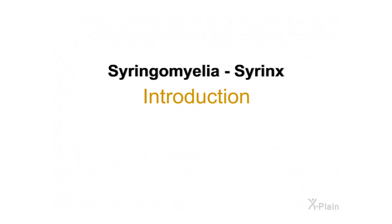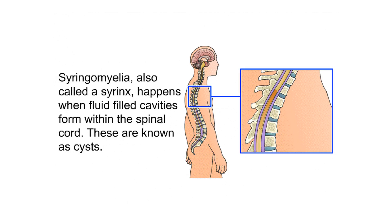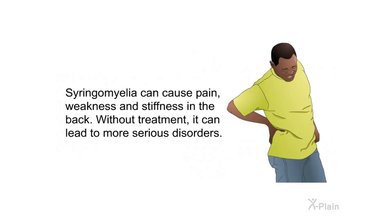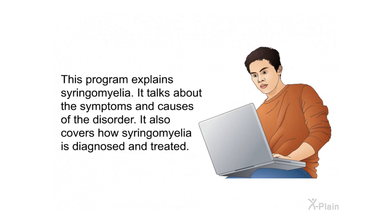Syringomyelia, also called a syrinx, happens when fluid-filled cavities form within the spinal cord. These are known as cysts. Syringomyelia can cause pain, weakness, and stiffness in the back. Without treatment, it can lead to more serious disorders. This program explains syringomyelia, its symptoms, causes, diagnosis, and treatment.